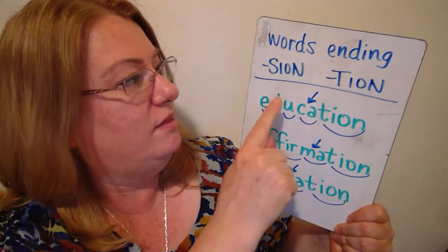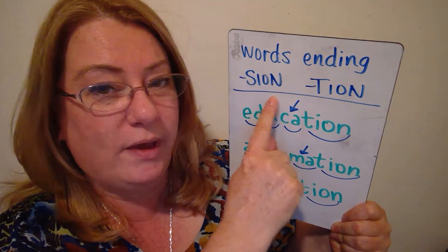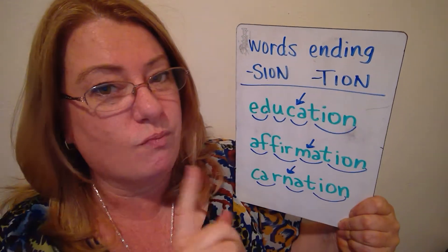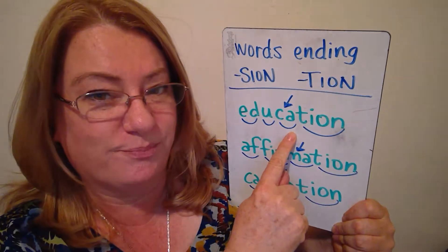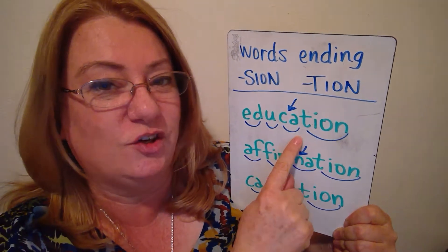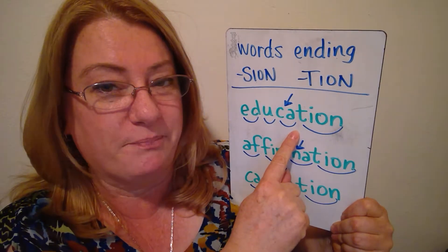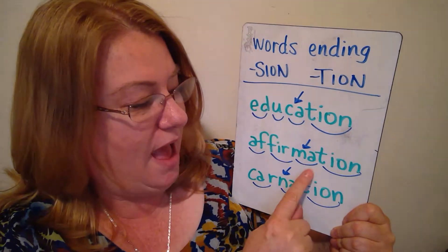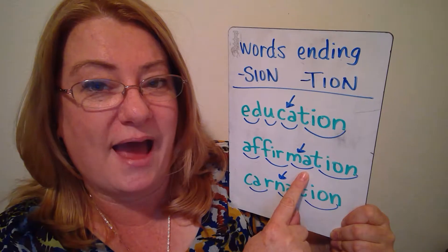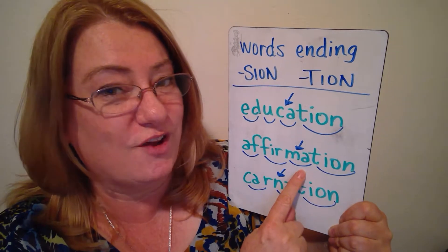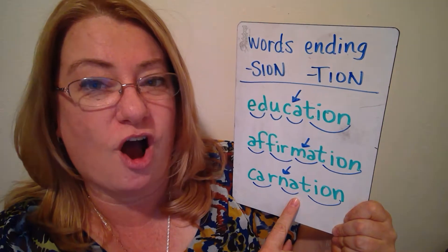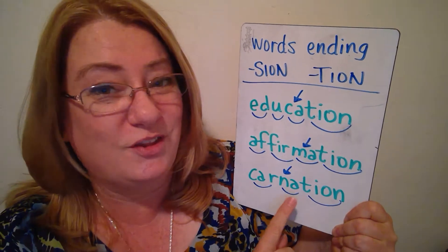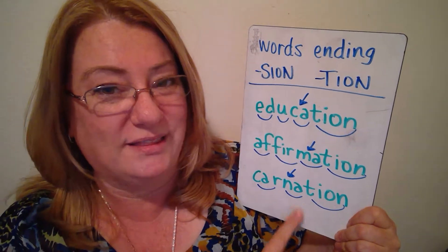We have one more category: nouns ending in '-sion' or '-tion.' These also follow the penultimate rule. 'Education' — you can hear the penultimate stress right there. 'Affirmation' — you can hear it right there. And 'carnation' — you can hear it on the penultimate syllable.